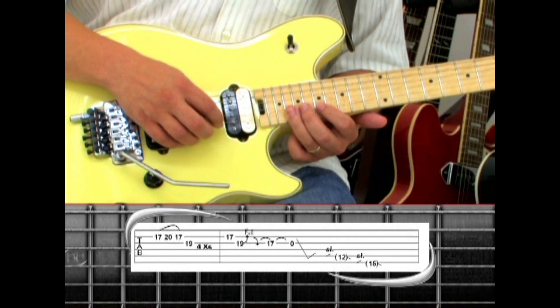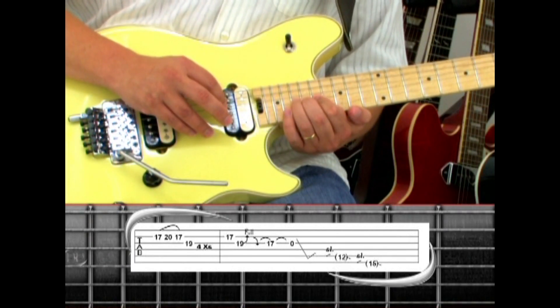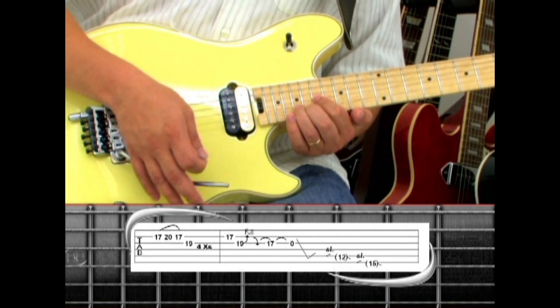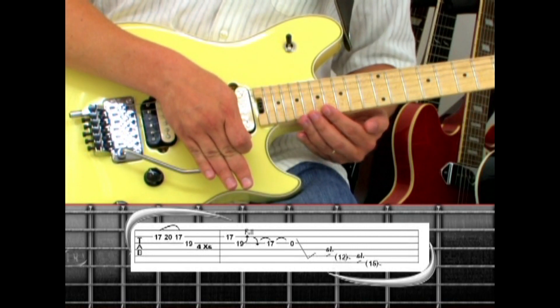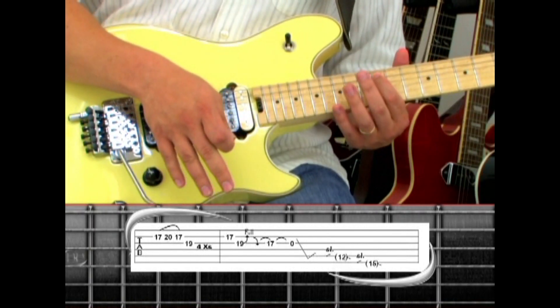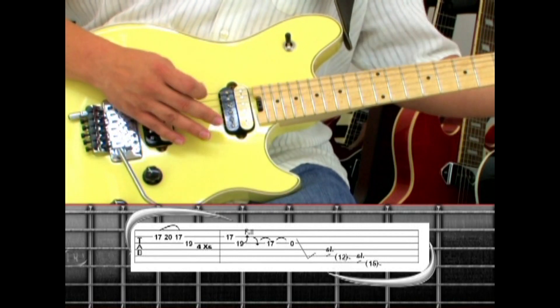Next is a second string seventeen, to third string nineteen with a bend and release, pull off to seventeen, pull off to open with a tremolo bar dive. As you return the bar, slide up to the fifth string twelve, then the sixth string fifteen, and slide down the neck for another chorus.